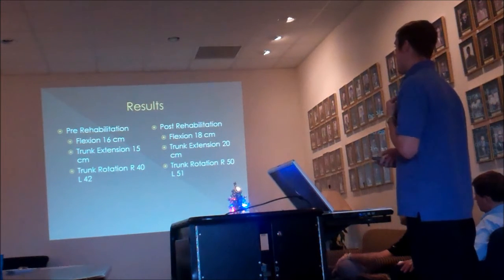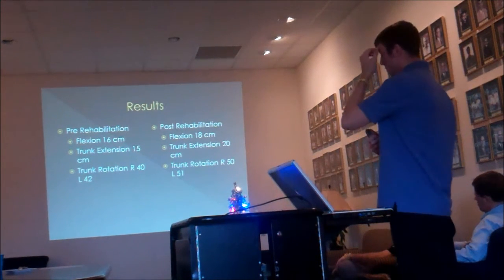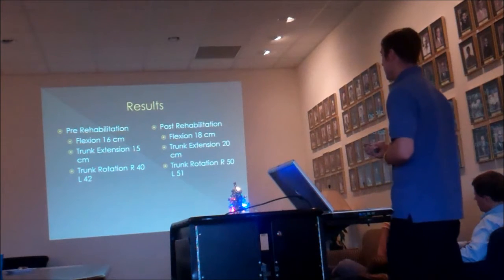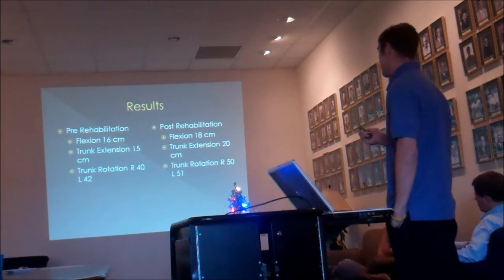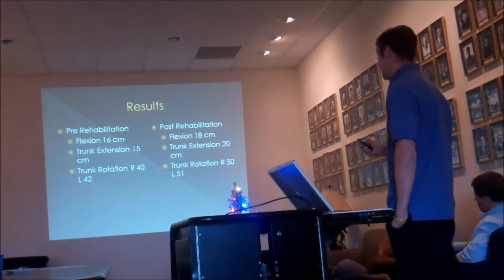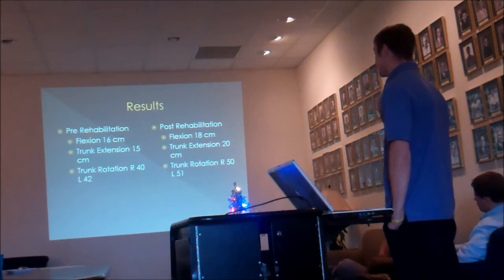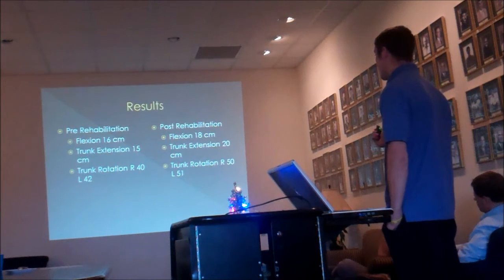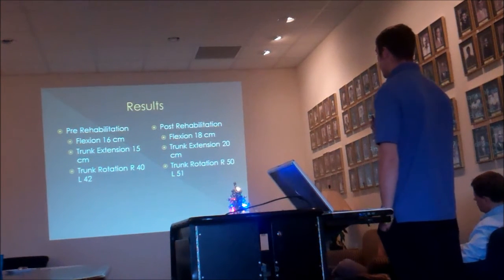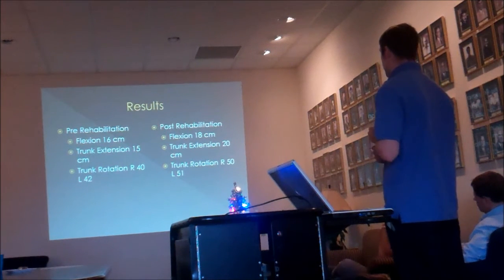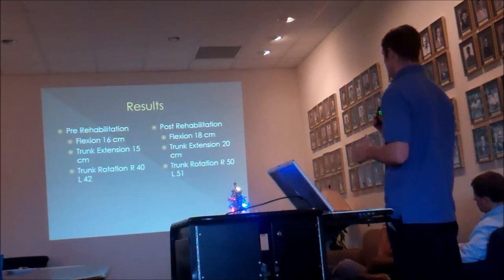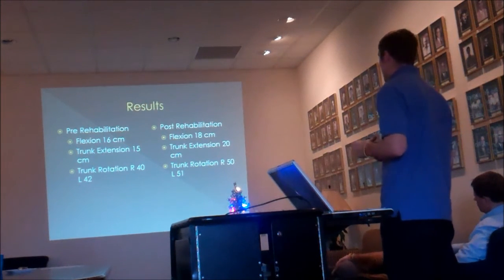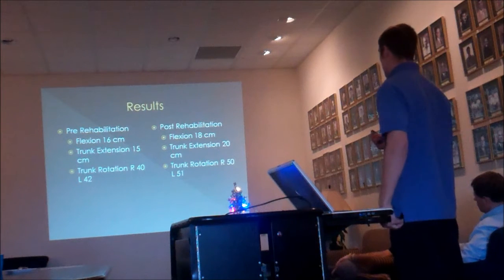For the results: the first time she came in, I measured trunk flexion by having her do a crunch on the table and measured from her C7 spinous process to the table — it was 16 inches. Trunk extension was 15 centimeters from her clavicles to the table. Trunk rotation was 40 degrees to the right and 42 degrees to the left. Post-rehab, her flexion increased 2 centimeters to 18, trunk extension went up 5 centimeters, and her rotation went up about 10 degrees on each side.